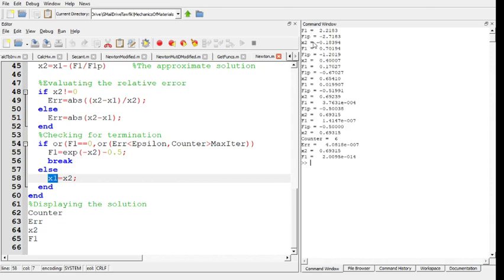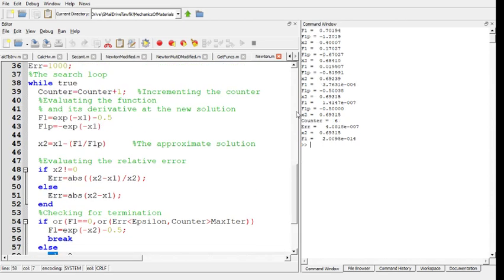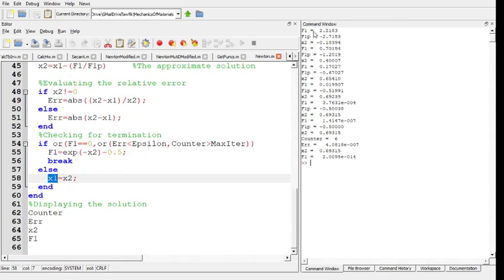If I run it here, I get the different values of f1, f1 prime, x2, f1, f1 prime, x2. Of course, I can remove all this, but you can see here how quickly it converges. It starts with, we started with the minus one.